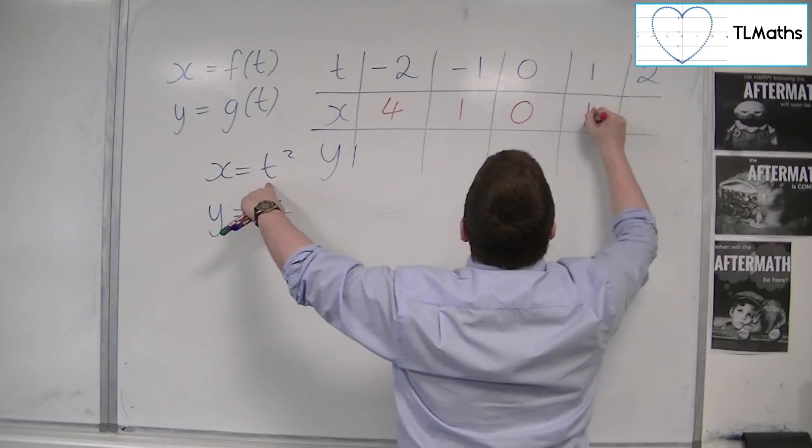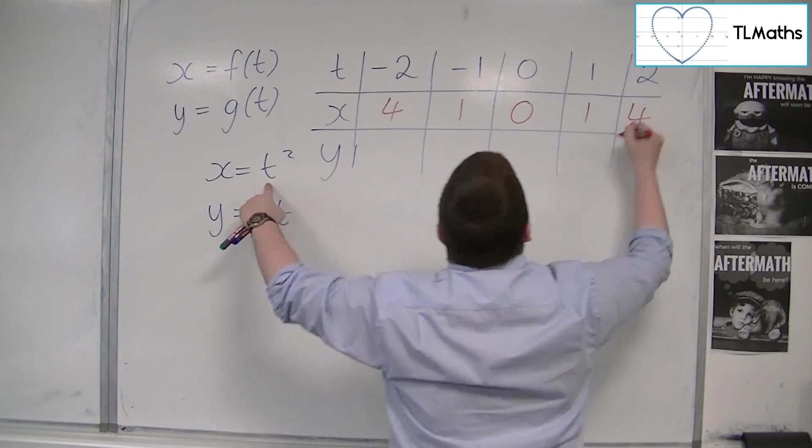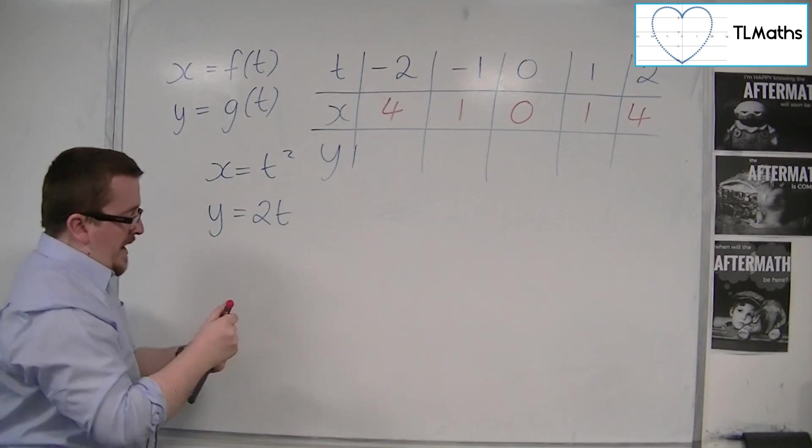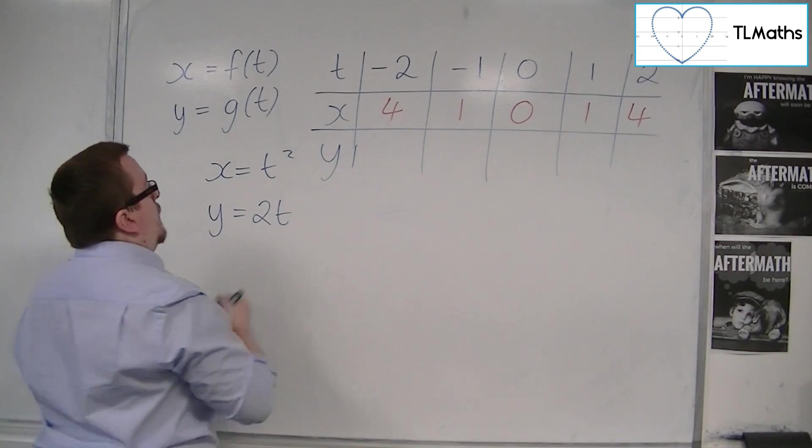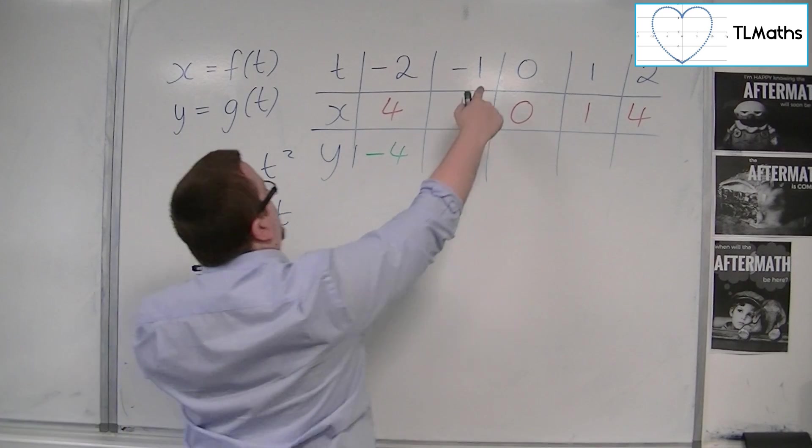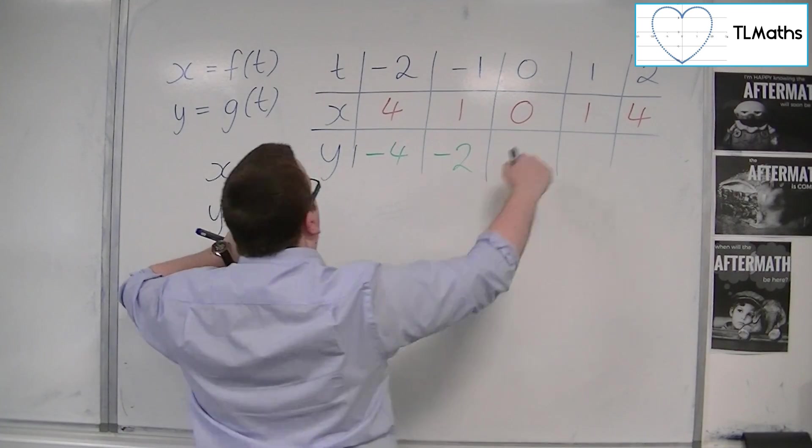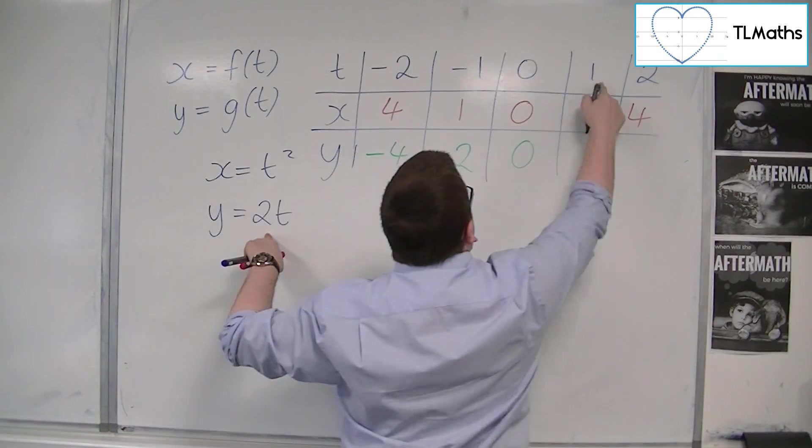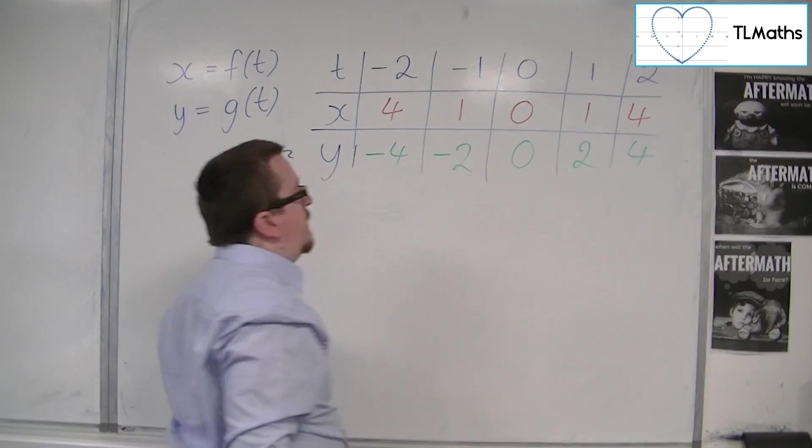And when t is 2, I'll get 4. Now for y, I'll have 2 lots of minus 2, so minus 4, 2 lots of minus 1, so minus 2, 2 lots of 0, 2 lots of 1, 2 lots of 2. So I now have pairs of coordinates.